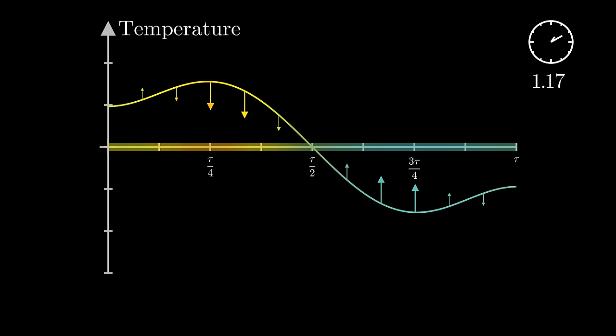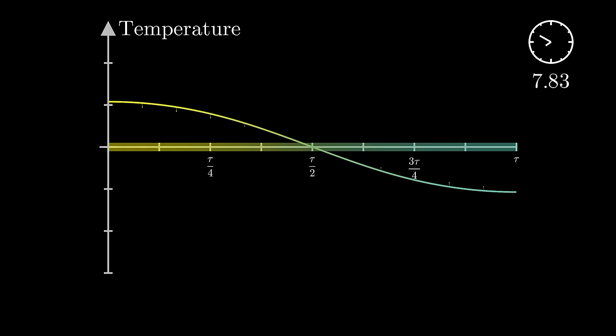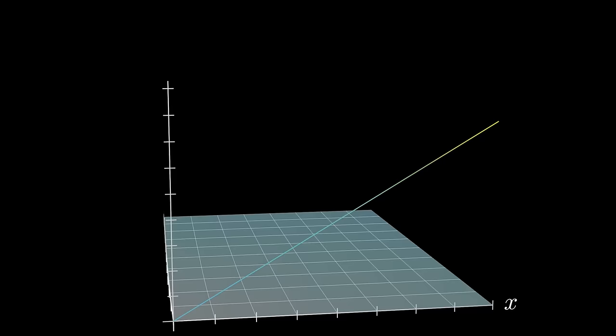Assuming that no heat flows in or out of the rod, here's what that evolution would actually look like. The points on the left are heated up a little at first, and those on the right are cooled down by their neighbors to the interior.